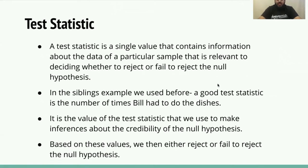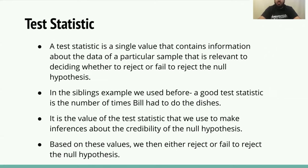Moving on to the test statistic — a really important part of your experiment. We're trying to find a single value that will help us make a decision about the results. A test statistic is a single value containing information about the data from a particular sample, relevant to deciding whether to reject or fail to reject the null hypothesis. In the siblings example, a good test statistic is the number of times Bill has to do the dishes — the value we use to make inferences about the credibility of the null hypothesis.